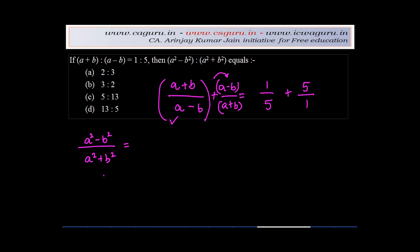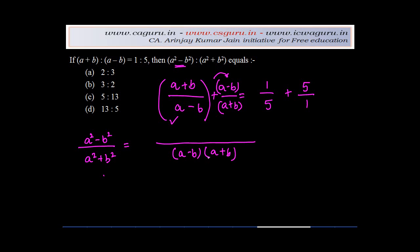Now you must be wondering why I did this in the first place. Look, my idea is to get (a²-b²). If I do this, what I will have is (a-b)(a+b) in the denominator, and this we know very well is equal to (a²-b²).